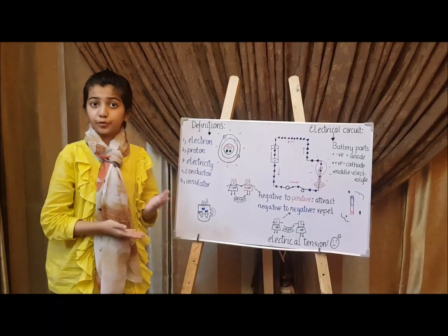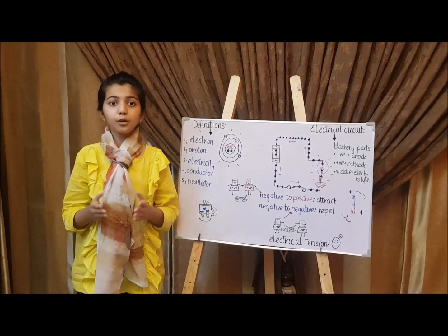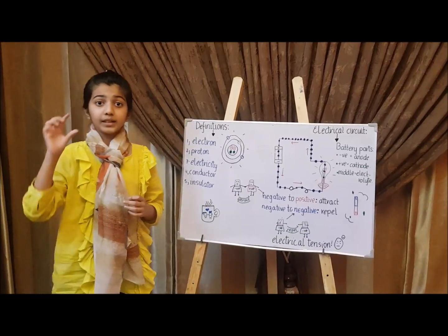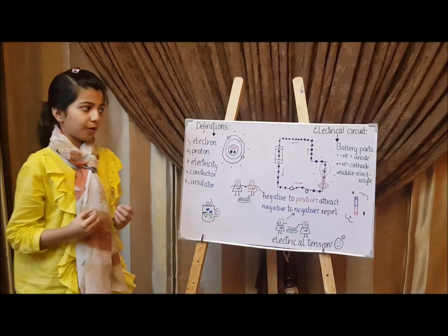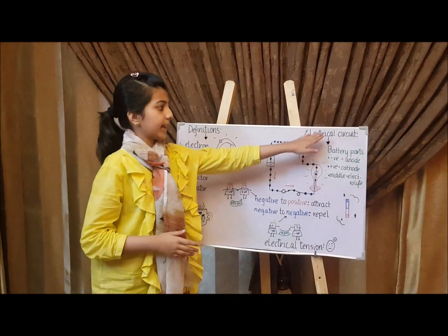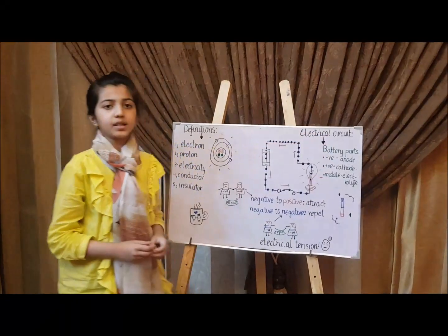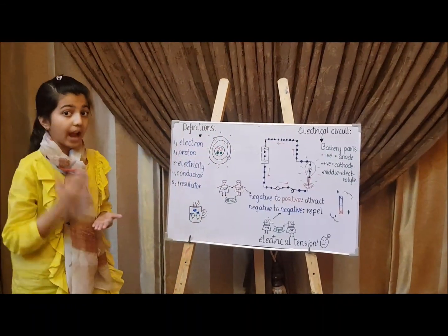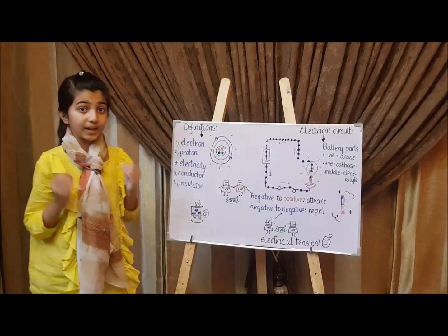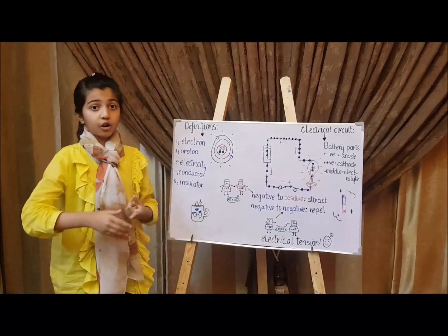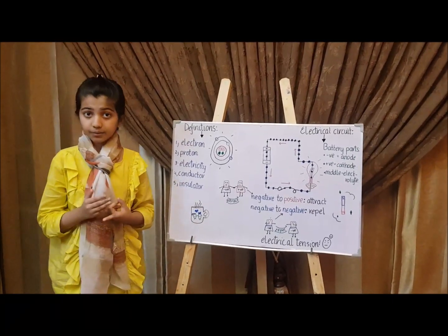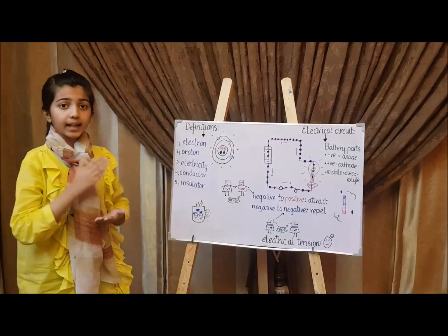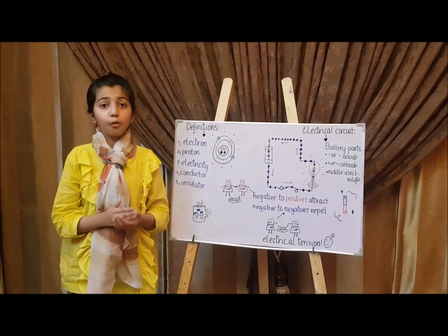Insulators are usually used for safety. For example, you might have seen the plastic coverings outside the plug sockets. Now let's move to our main topic, electrical circuits. The main components which have to be present in a circuit are a battery or cell, two wires, a switch, and a lamp or a bulb.